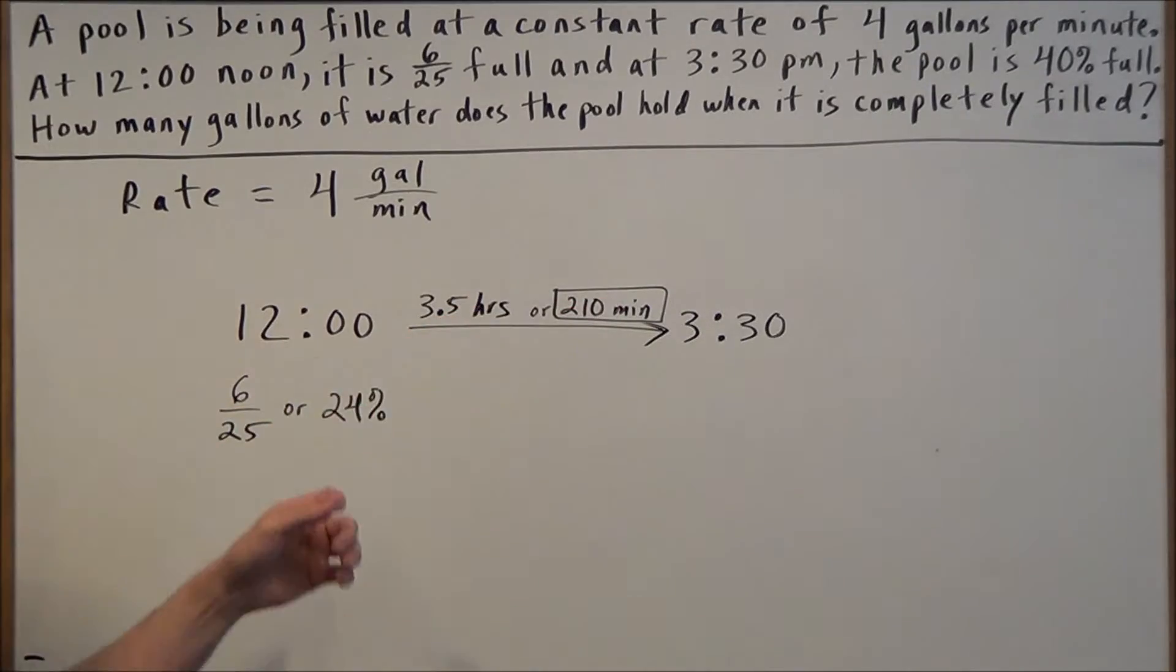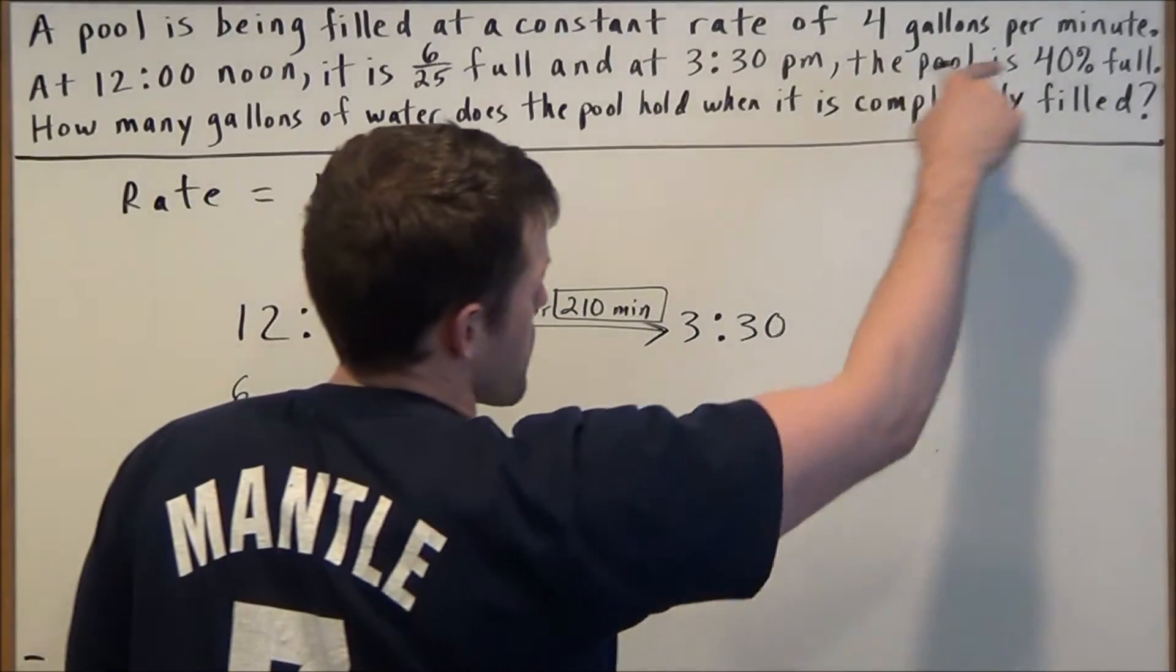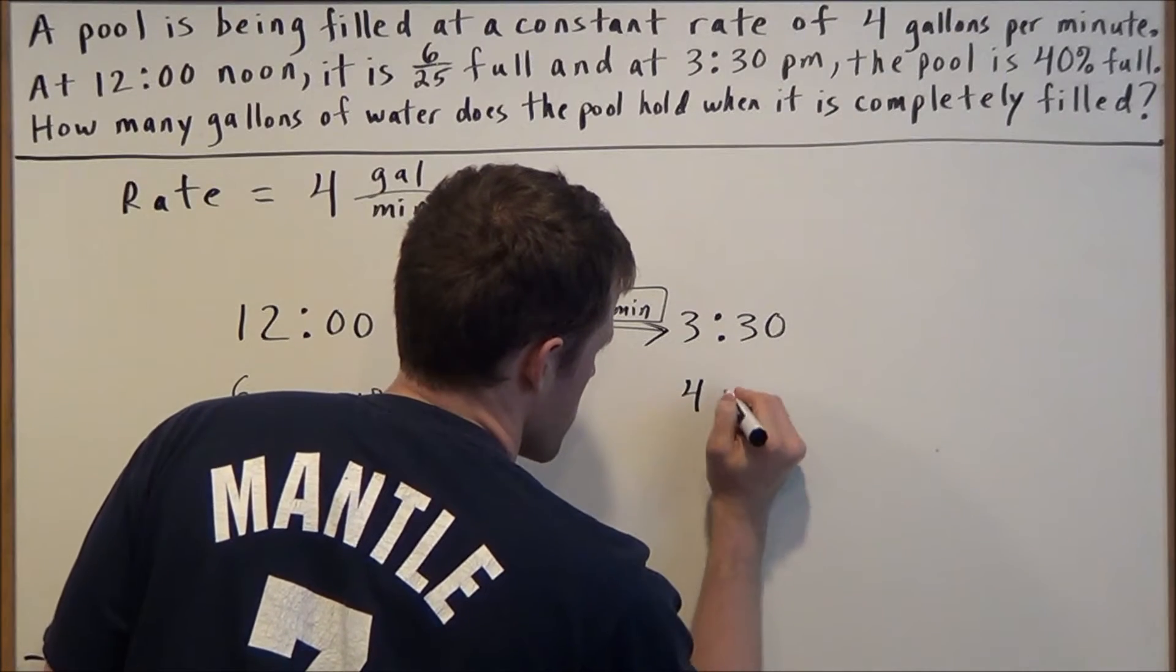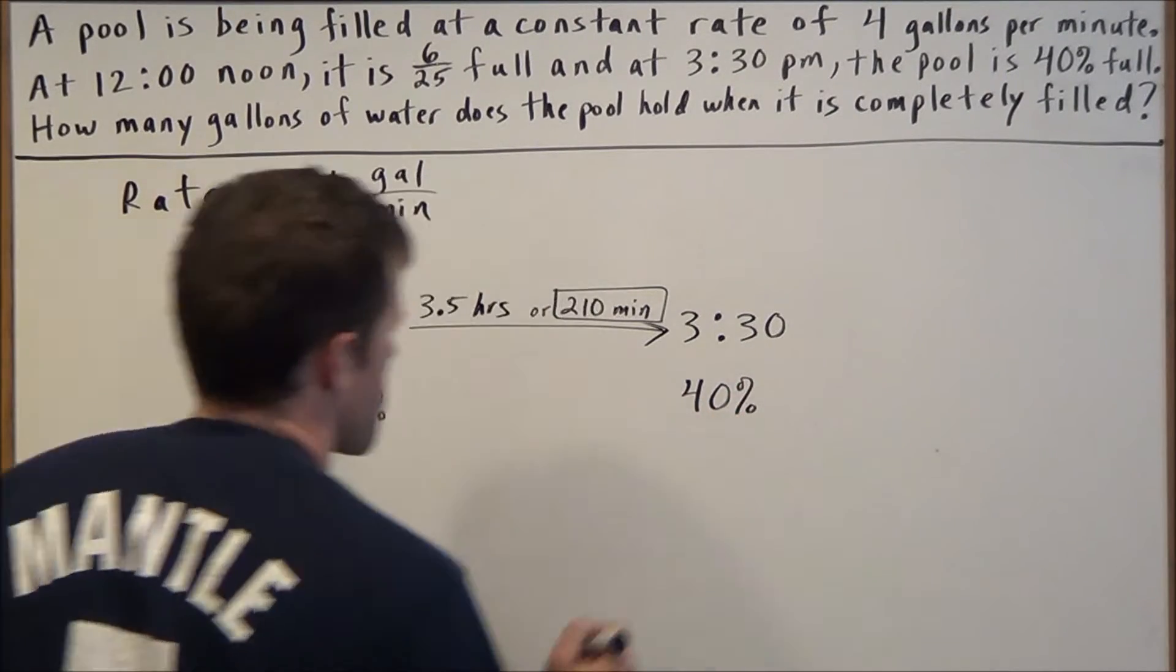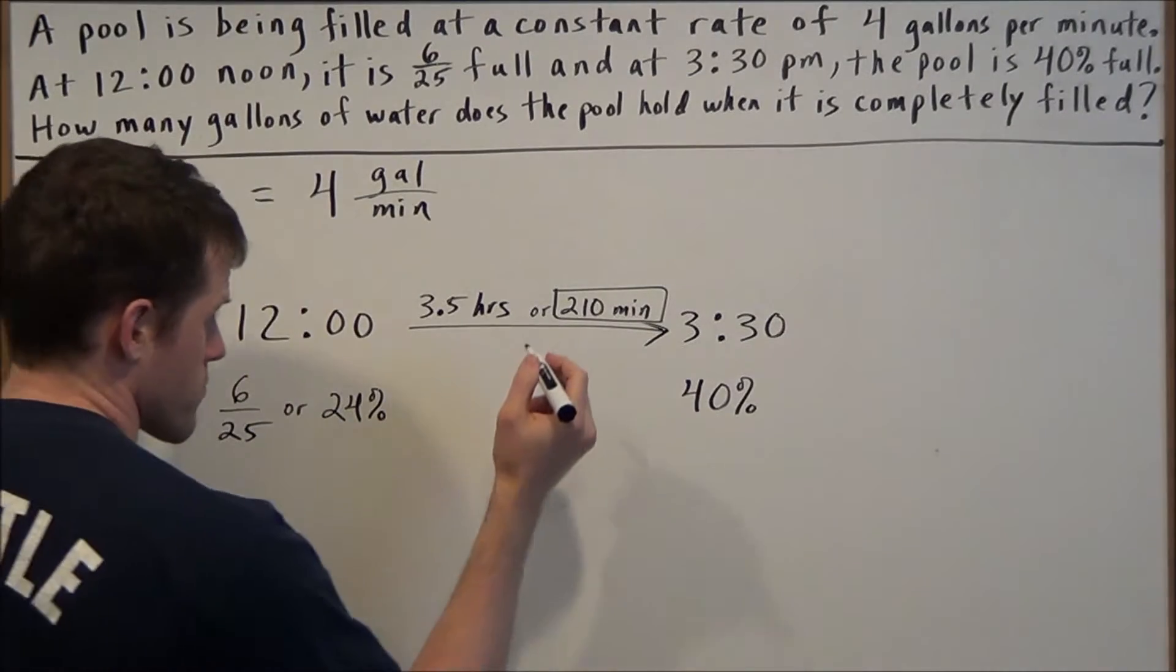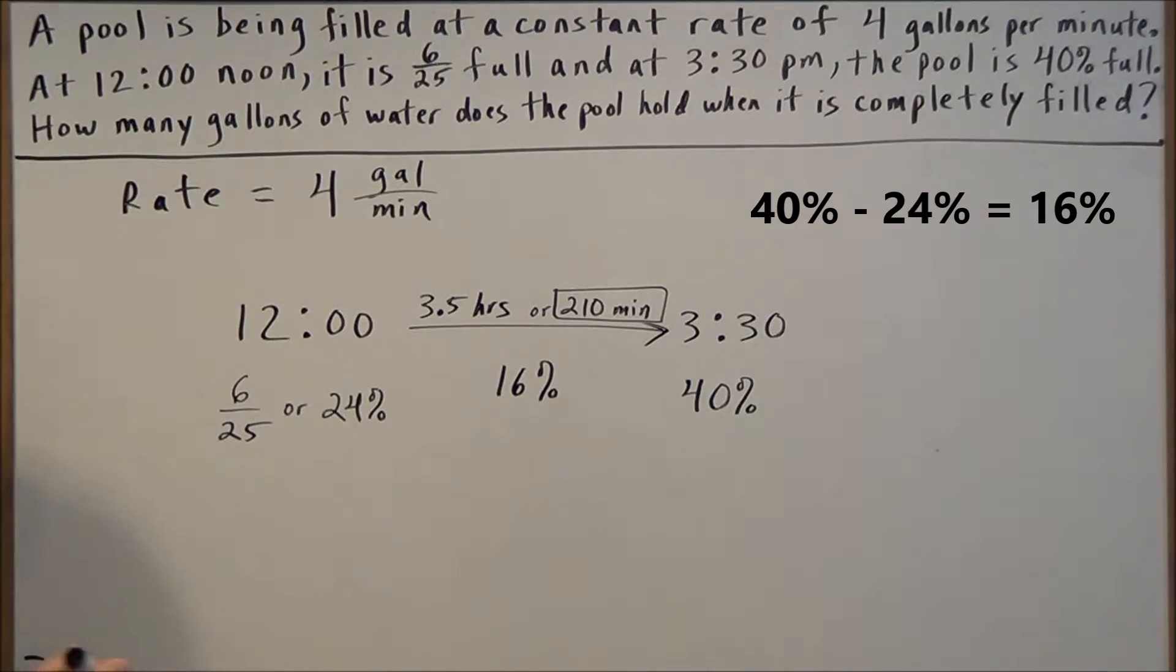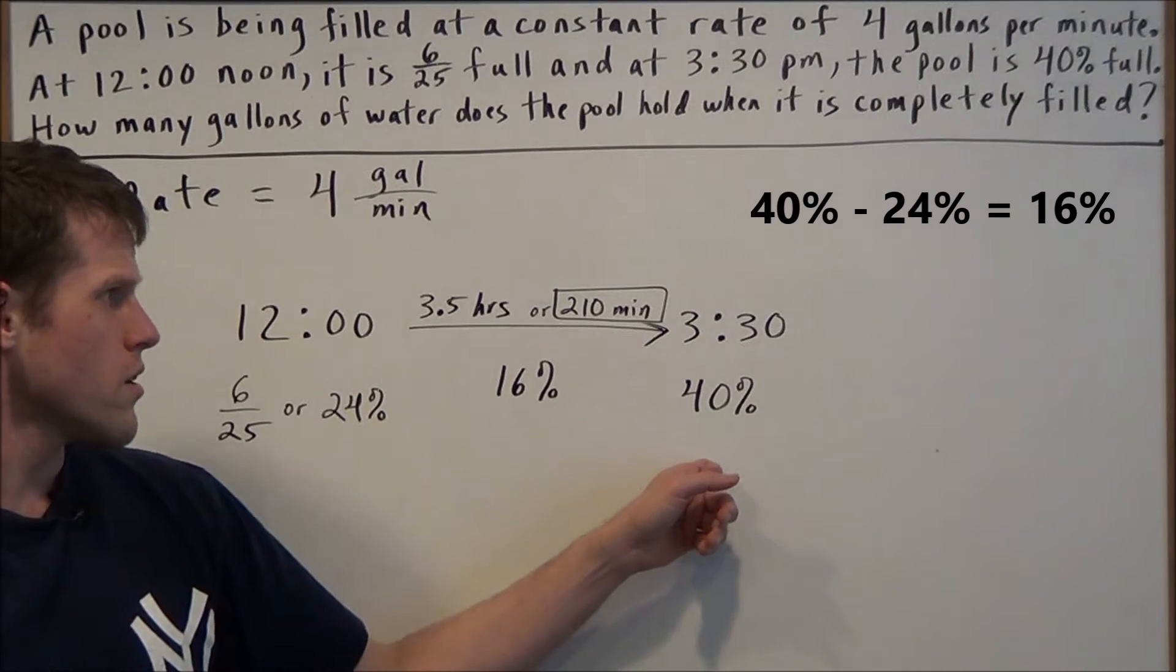So 210 minutes went by from 12 o'clock to 3:30. But we also know that at 3:30 the pool is 40% full. So from 24% to 40%, that's a 16% change from 24 to 40.